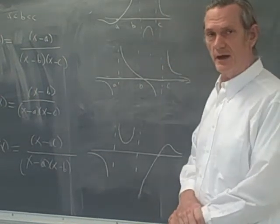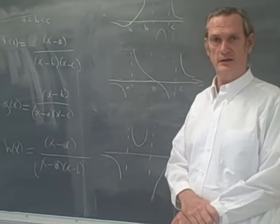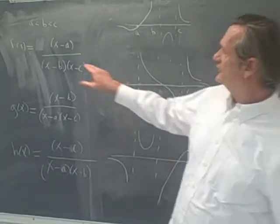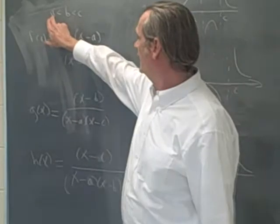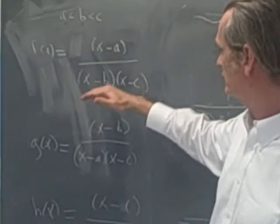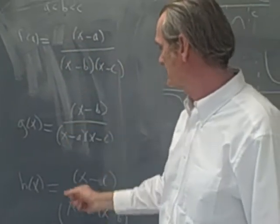Okay, so I want to remind you of something that we learned from looking at x over x squared plus 1 and so forth. And that is, if we have three numbers, a less than b less than c, and we look at these three rational functions, linear over quadratics.